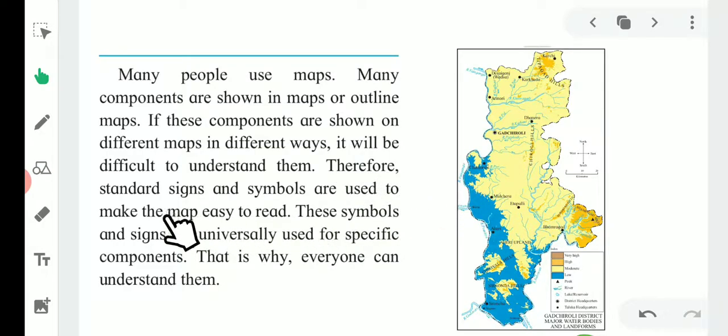Therefore, the standard signs and symbols are used to make the map easy to read. The standard signs and symbols are fixed to use in the map. The symbols and signs are universally used for the specific component. That is why everyone can understand them.